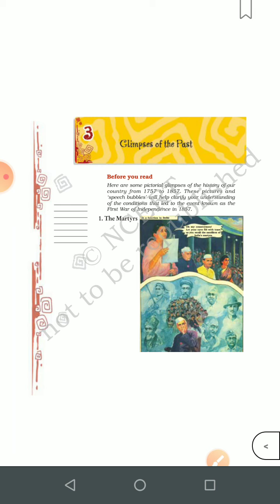The English East India Company came to India for trade, but with its superior weapons and diplomacy, they extended their power in the 18th century. They came as traders but were very diplomatic. Indian princes were divided and short-sighted — they never thought of the future. People in India had no peace due to constant fights among the states, and they sought the help of the English merchants to defeat each other.